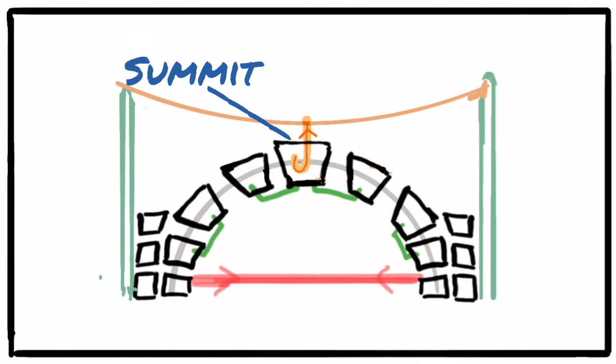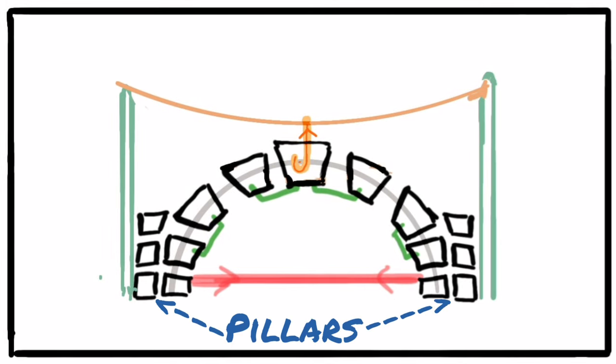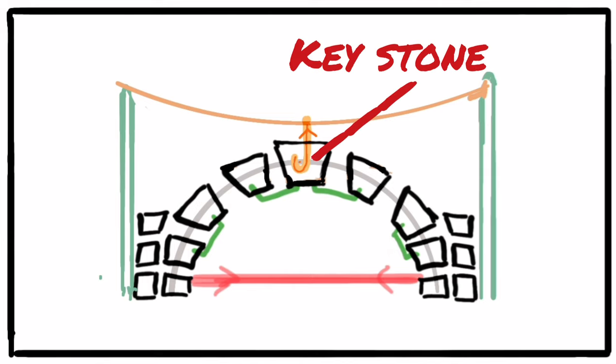The summit is the highest point of the arch. The pillars are the points of an arch which are in contact with the ground. And the keystone is the stone in the arch where the forces from both pillars meet, hence this stone handles the highest pressure in the arch.